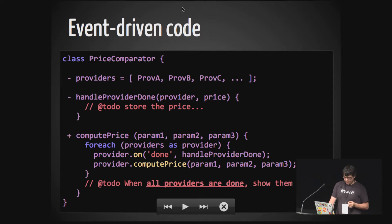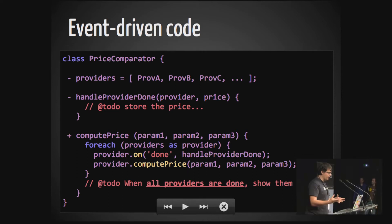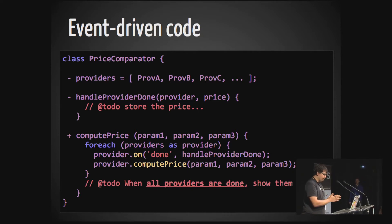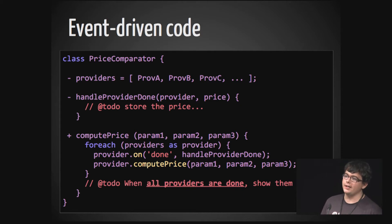Here, for example, we can see that our providers, as we discussed earlier, launch an event called done and then we handle that. But what happens when we have this awesome requirement in our application that a hundred providers need to fetch a hundred asynchronous requests to a hundred different servers and then when all are done, I need to show the results.